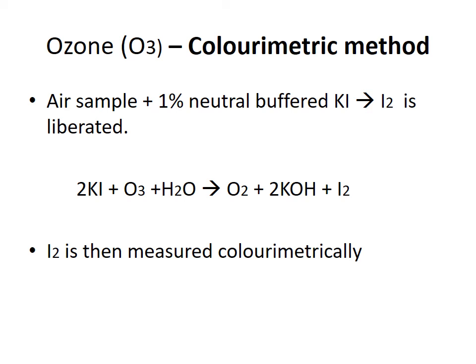For ozone analysis, the colorimetric method is used. A sample of air at a known flow rate is passed through a 1% neutral buffered potassium iodide solution, liberating iodine gas: 2KI + O₃ + H₂O → O₂ + 2KOH + I₂. The liberated iodine is measured colorimetrically at a wavelength of 352 nm. Since 1 mole of ozone releases 1 mole of iodine, the iodine concentration measured is directly related to the total ozone concentration.